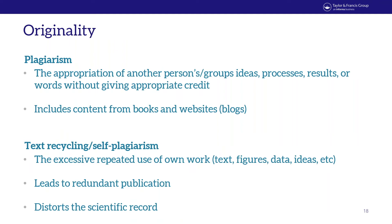Originality issues are also easier to detect — most journals use software to measure overlap with previously published work. If you use someone else's ideas, processes, or words, you must clearly cite them. This applies to websites, blogs, and your own previously published work. We are also seeing a rise in text recycling, often called 'salami slicing' — using the same ideas, data, or words excessively to the point that it's not offering new insights. Anything you publish should be original content that pushes the research field forward.